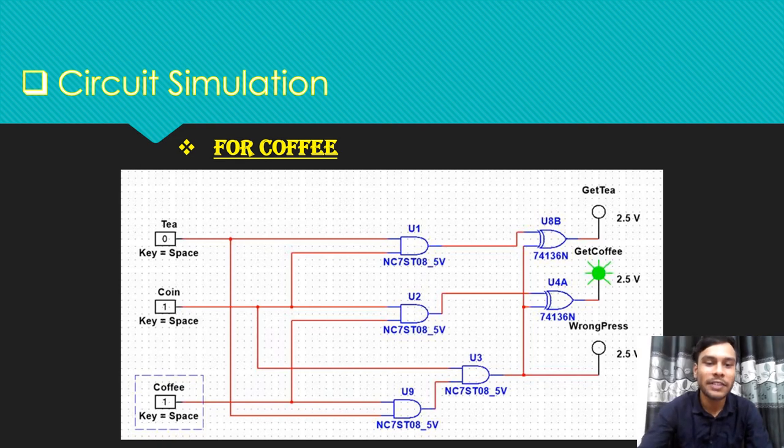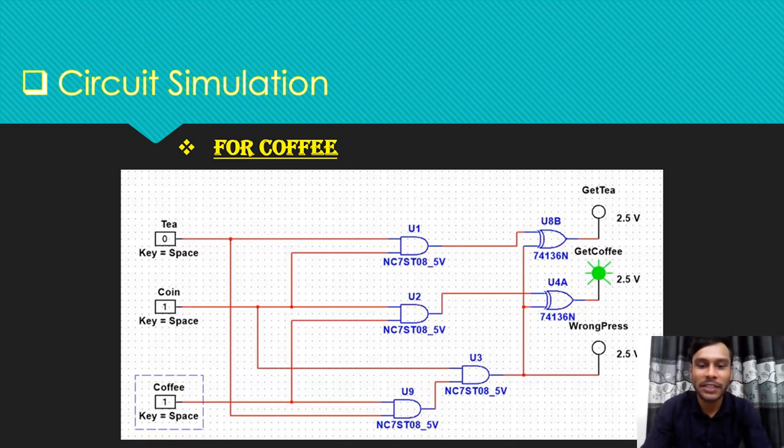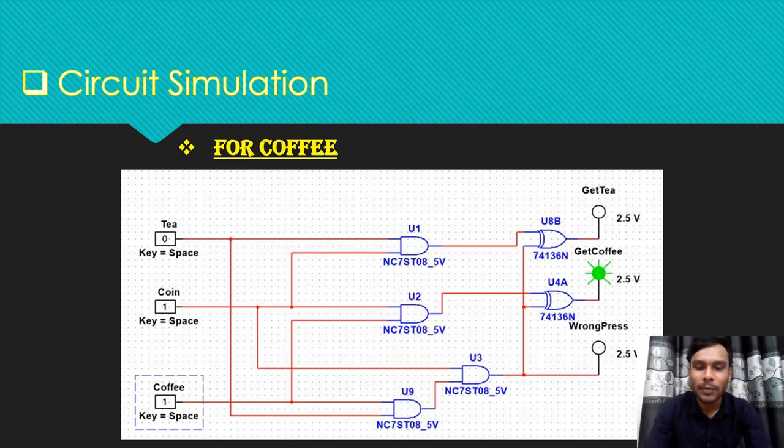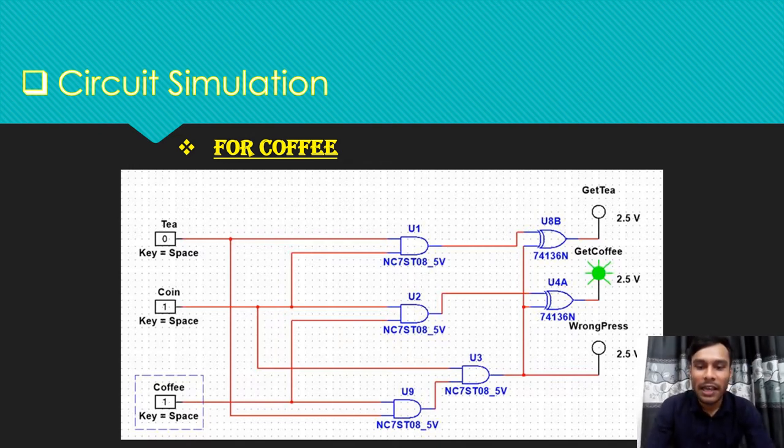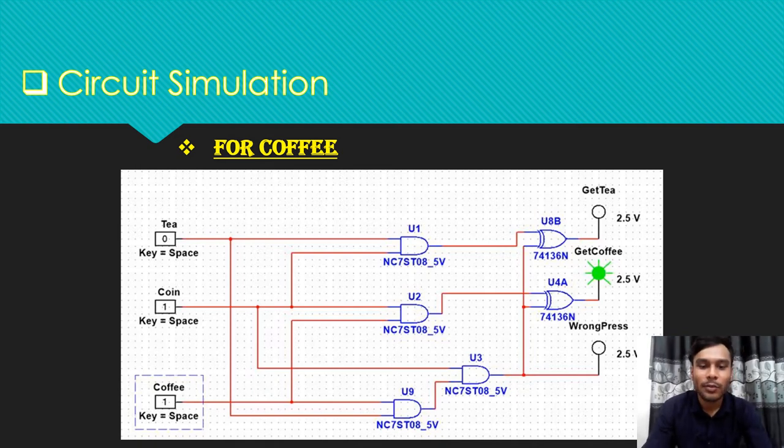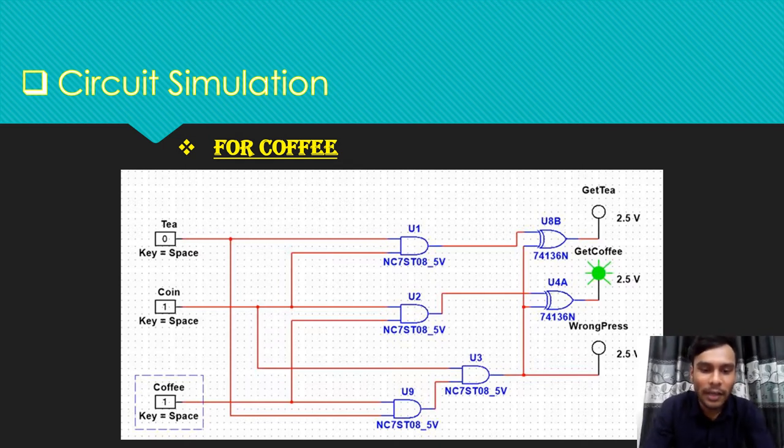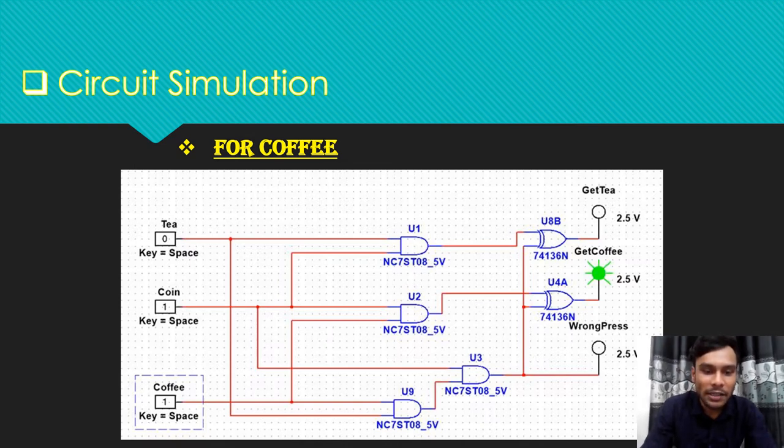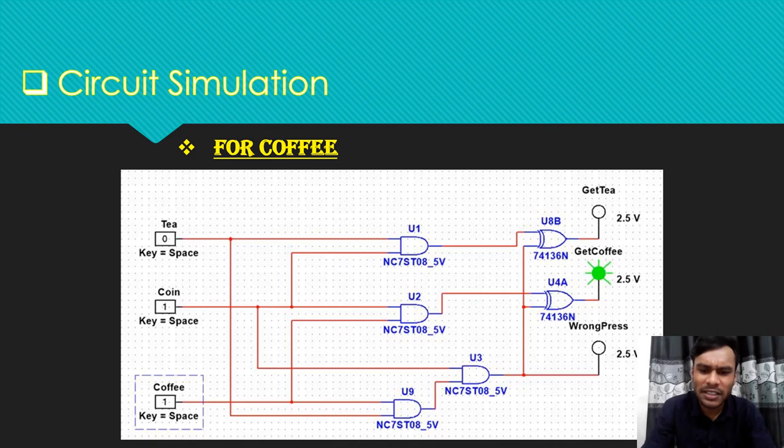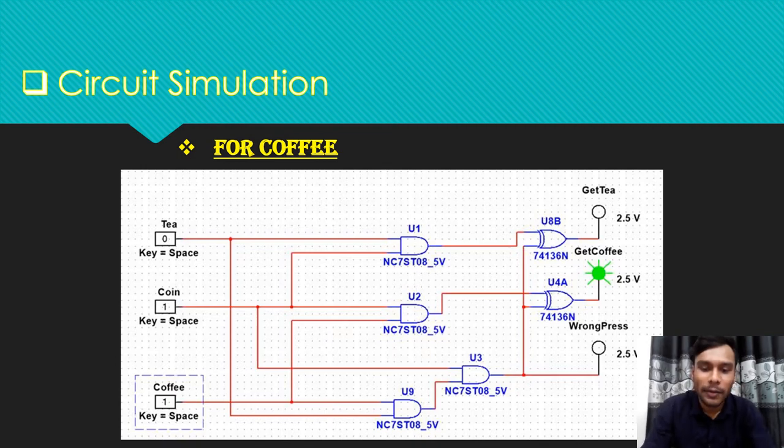Assalamualaikum sir, I would like to present this slide. For getting coffee from this vending machine, the input signal from coin and tea option must be one, while the input signal of the coffee option must be zero. After inserting this input, from this simulation you can see that the output of U1, U3, and U9 AND gates will be zero, and the output of U2 AND gate will be one. Then the outputs of U2 and U3 will insert as input in an XOR gate. The output of this XOR gate will be one, and then we will get our coffee from this vending machine, because this XOR gate is connected with the coffee output option, so it will activate the working process for getting ready a cup of coffee.